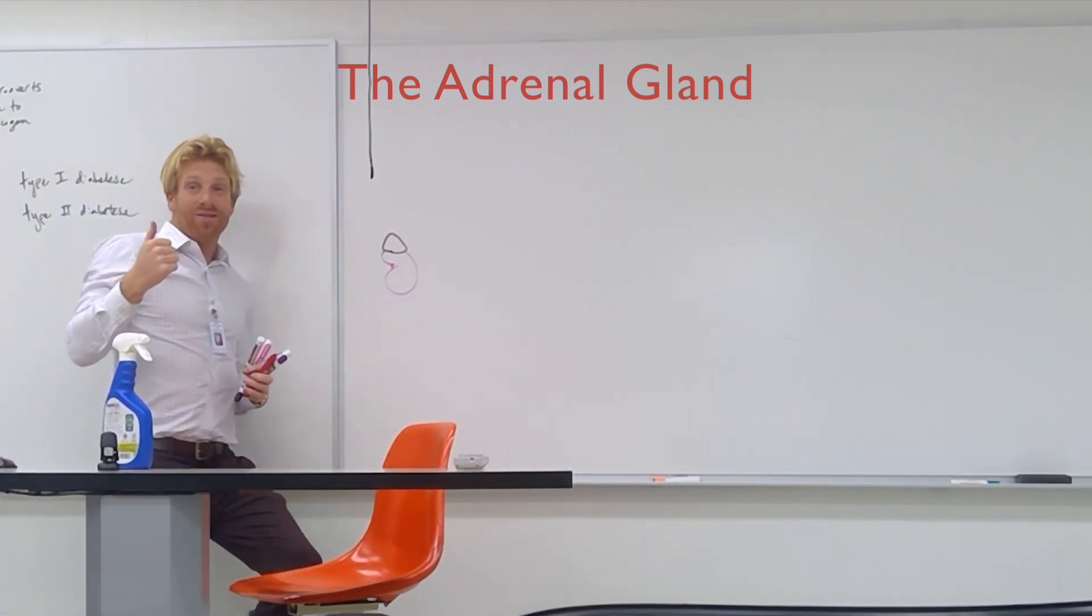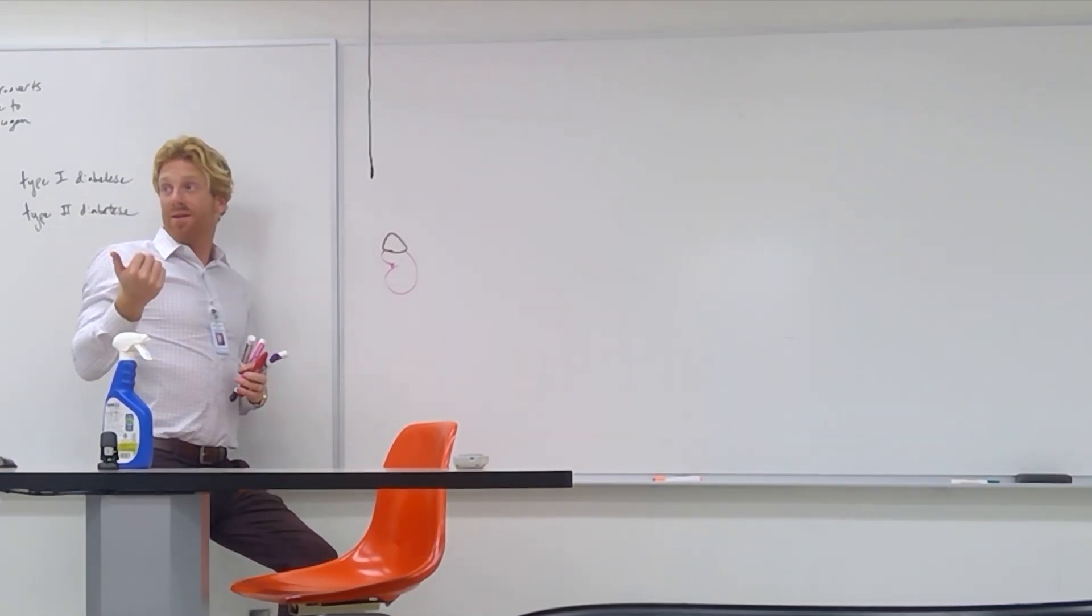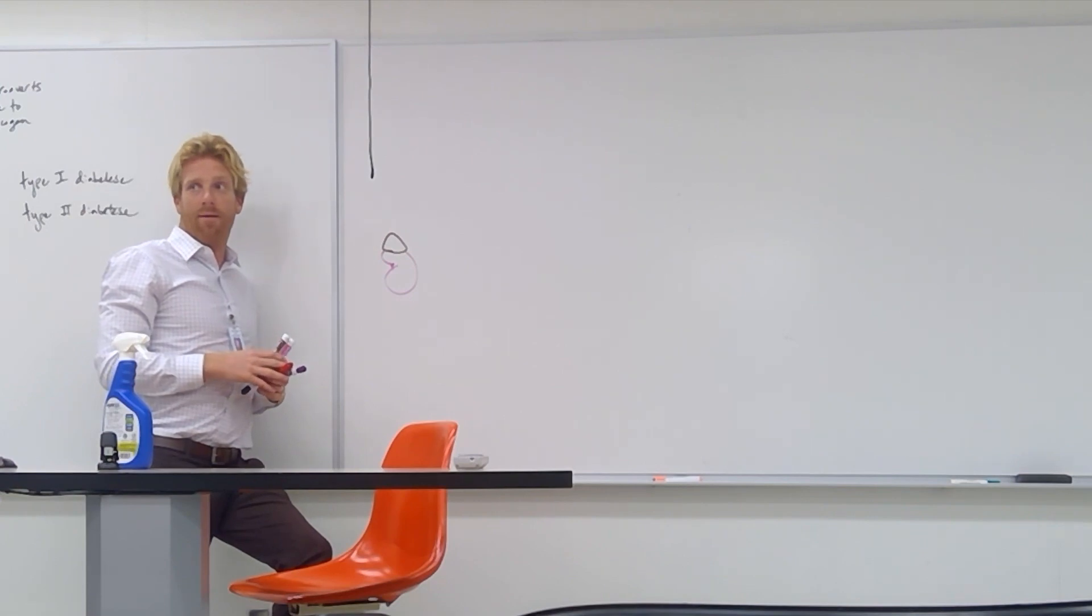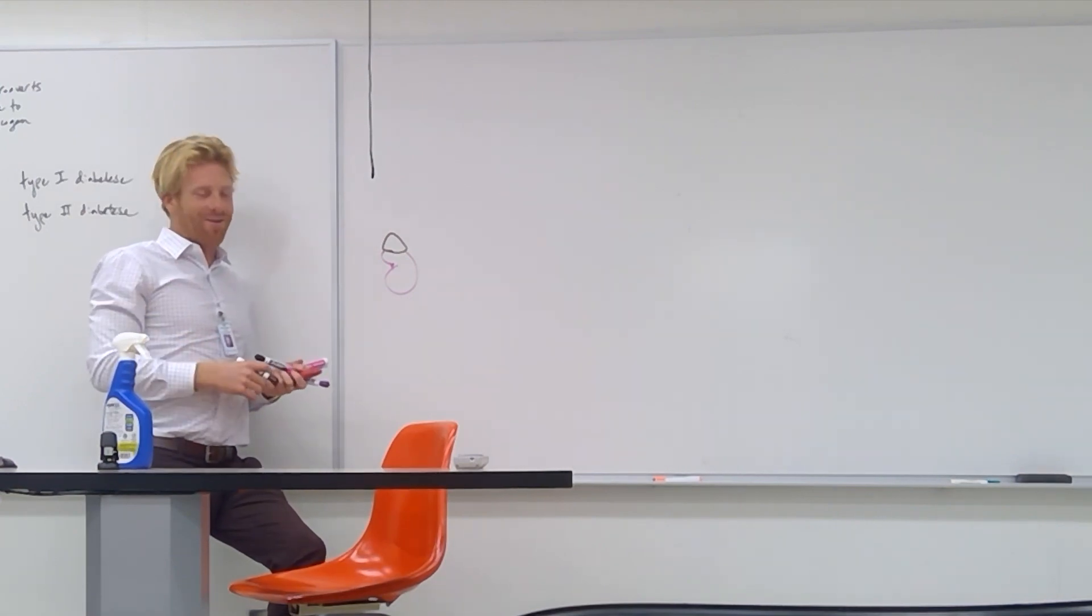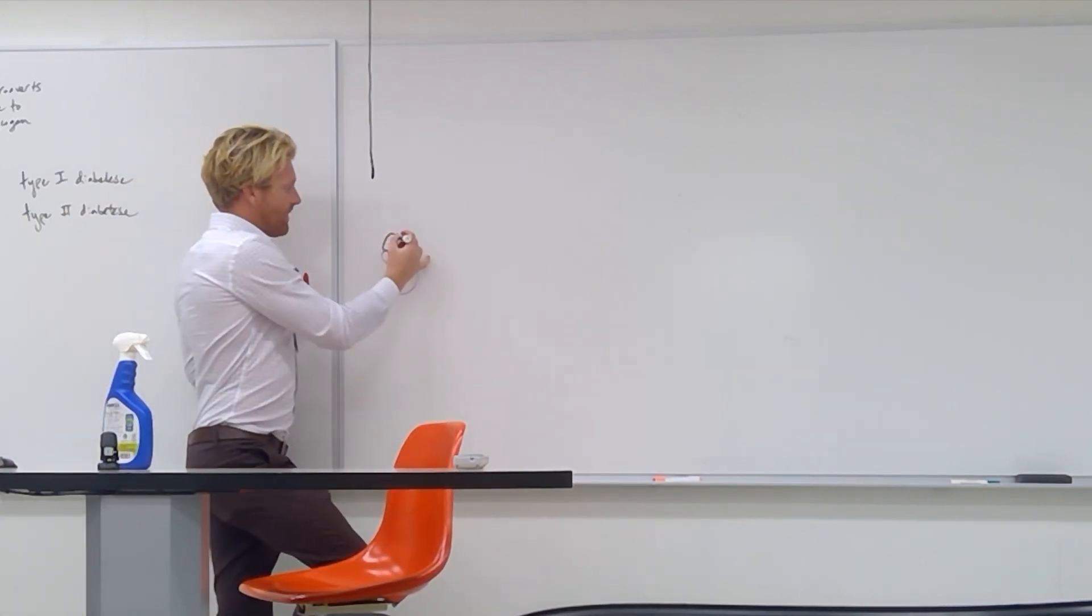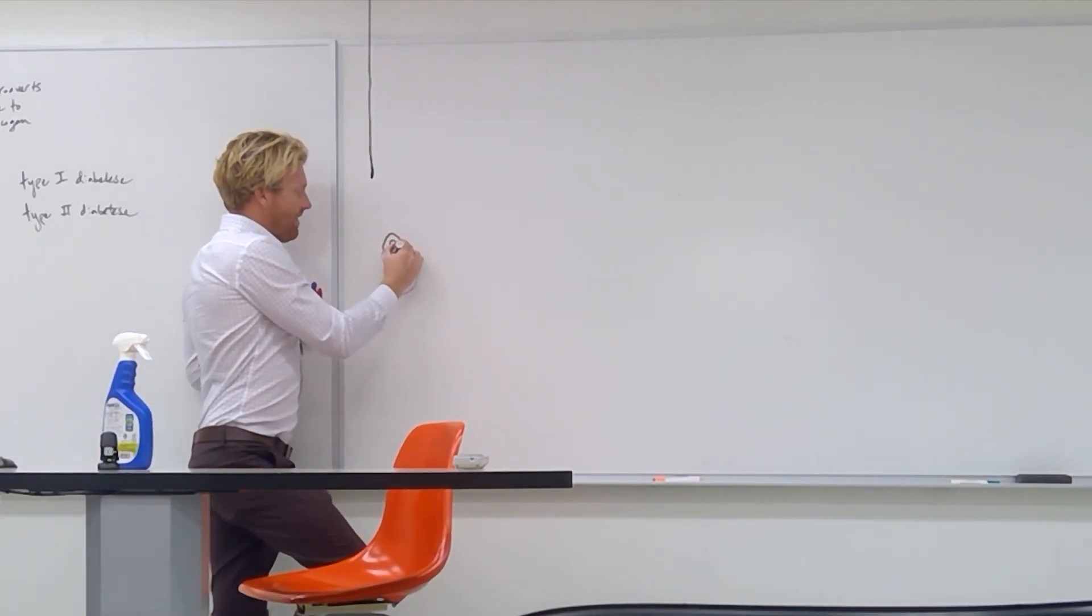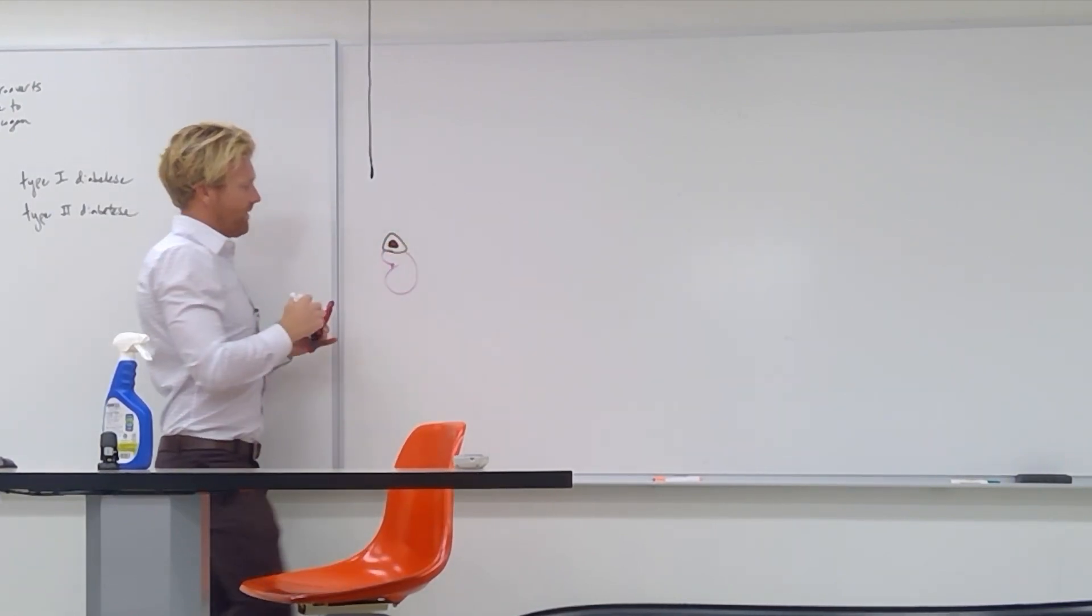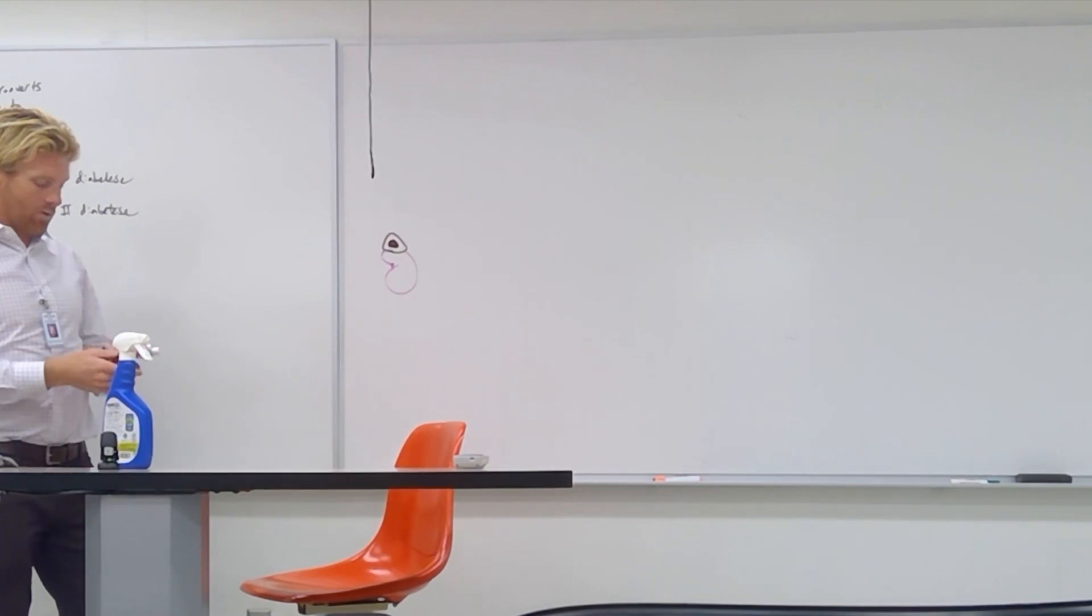The adrenal gland has two different parts. It's got a cortex and a medulla. Who's on the outside? Cortex or medulla? Cortex. Cortex, that's right. It's like all the cortices of the body. So we'll draw two different parts. I'll shade in the medulla, which is on the inside in dark. And the cortex, well, it's white in color.